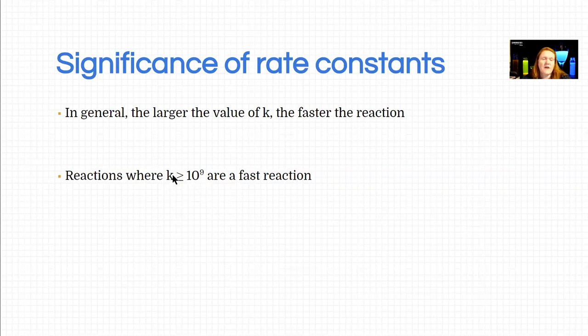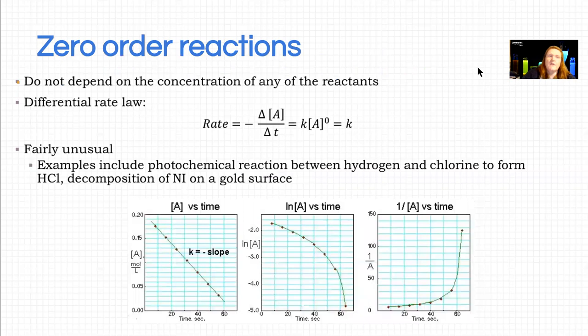So the value you calculate for k gives you an indication of how long a reaction is going to take to go. The bigger that it is, the faster the reaction is. So the smaller it is, the slower. All right.